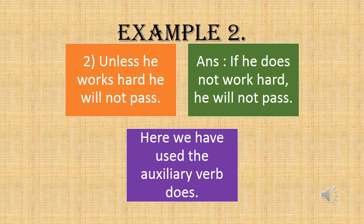Example 2: Unless he works hard, he will not pass. The answer is: if he does not work hard, he will not pass. Here we have used the auxiliary verb 'does'.